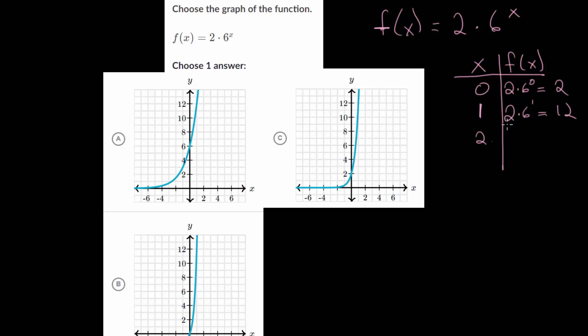If we plug in 2, we get 2 times 6 squared, so that's 2 times 36, which is 72. You can see going from one value to the next, as we're increasing x by 1, the function value is multiplied by 6. The 6 is the base of our exponential expression. The number out front multiplied by the exponential expression, the number raised to the variable power, this is our starting value.